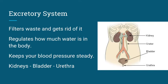Next is the excretory system. The excretory system exits stuff — it filters wastes and gets rid of anything that your body doesn't need. It also helps to regulate how much water is in your body. If you drink too much water, the organ called the kidneys helps to process and pump out into your bladder all of the excess water that you can then pee out. So your excretory system gets rid of all the excess water as well as all the excess wastes that might be forming inside of your blood.